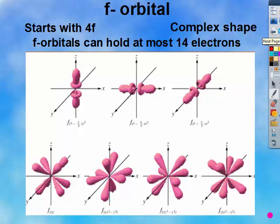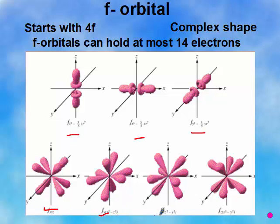And finally, the F orbital can hold 14 electrons because there's seven orbitals. And the F orbital just has a complex shape, as you can see.